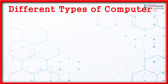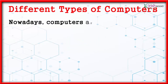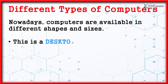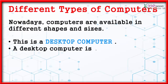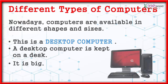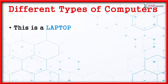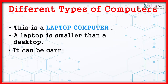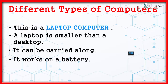Different types of computers. Nowadays, computers are available in different shapes and sizes. This is a desktop computer — a desktop computer is kept on a desk and it is big. This is a laptop computer — a laptop is smaller than a desktop, can be carried along, and works on a battery.